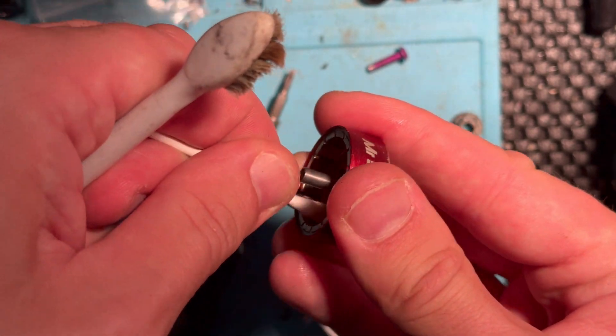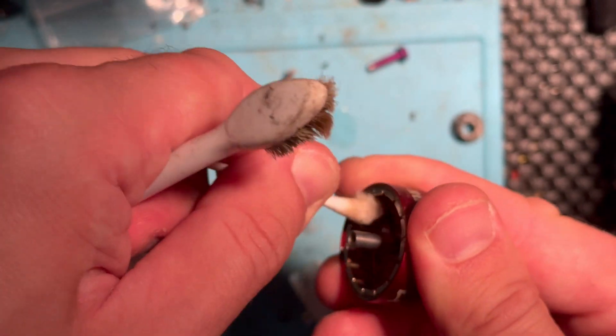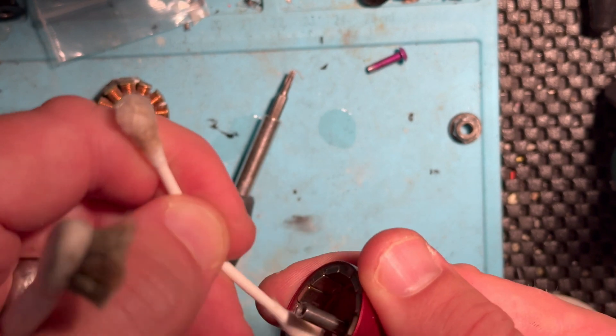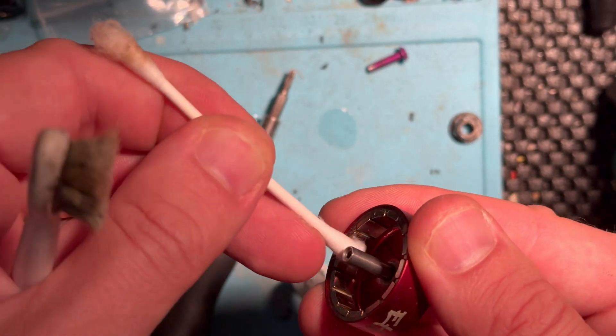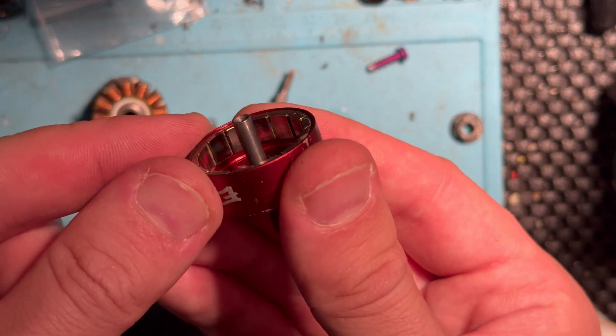And the faster that you actually get the alcohol off of the surface, the less likely that it is that you'll actually damage anything. I mean, you really shouldn't damage much. Again, I've never had a problem doing it this way. Looks pretty good.